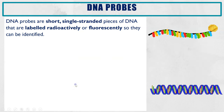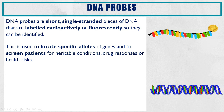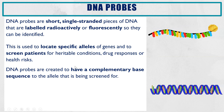So first of all let's have a look at DNA probes. DNA probes are short single-stranded pieces of DNA which have a radioactive or fluorescent label on them so that these DNA probes can be located. The DNA probe itself is used to locate specific alleles, and the sequence of the DNA in this probe is deliberately chosen — it is complementary in sequence to the allele being screened for.